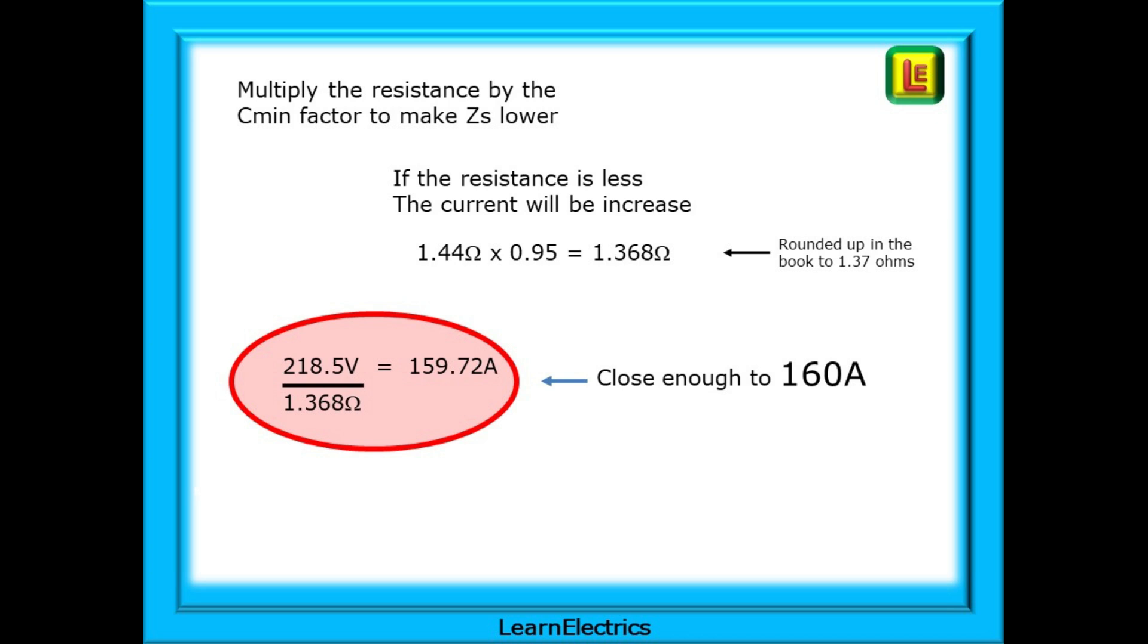What we do is multiply the standard resistance, the raw data, by the same Cmin factor of 0.95. This will reduce the resistance. It will make the maximum ZS smaller. If the resistance goes down the current will go up. 1.44 ohms multiplied by 0.95 gives us a tabulated ZS of 1.368 ohms shown as 1.37 in the book. How does this affect the current? 218.5 volts divided by 1.368 ohms is 159.72 amps which is 160 amps when rounded up.